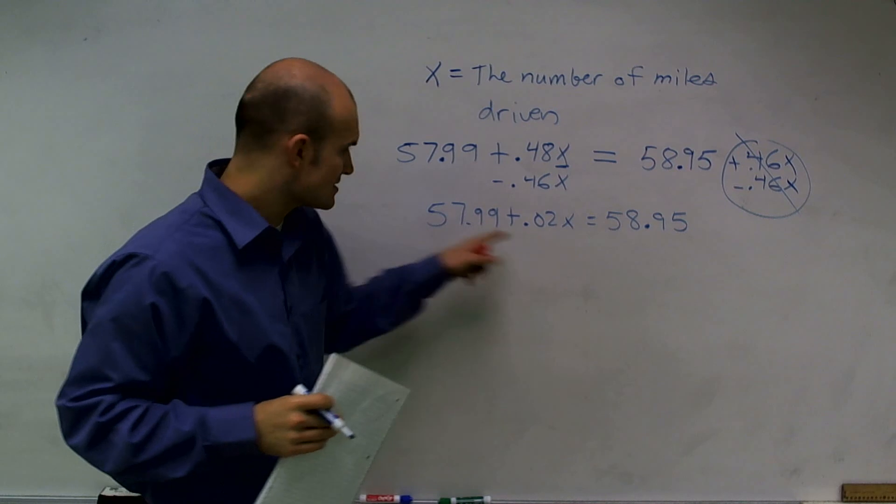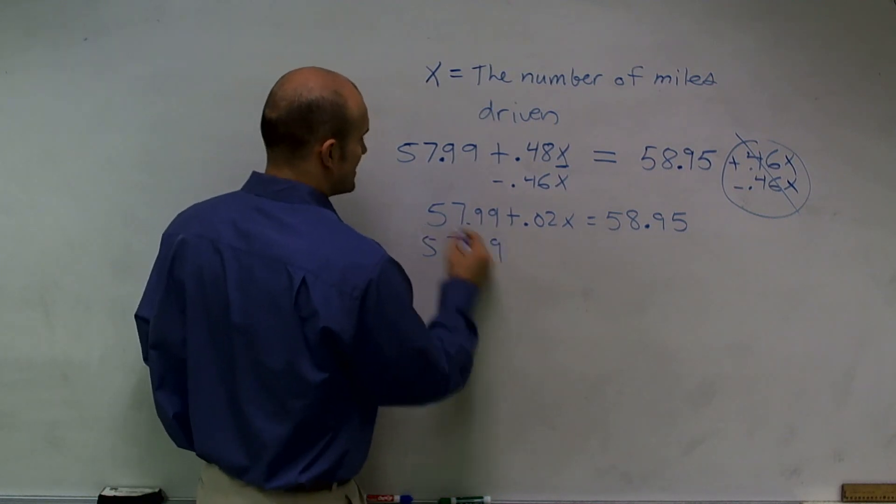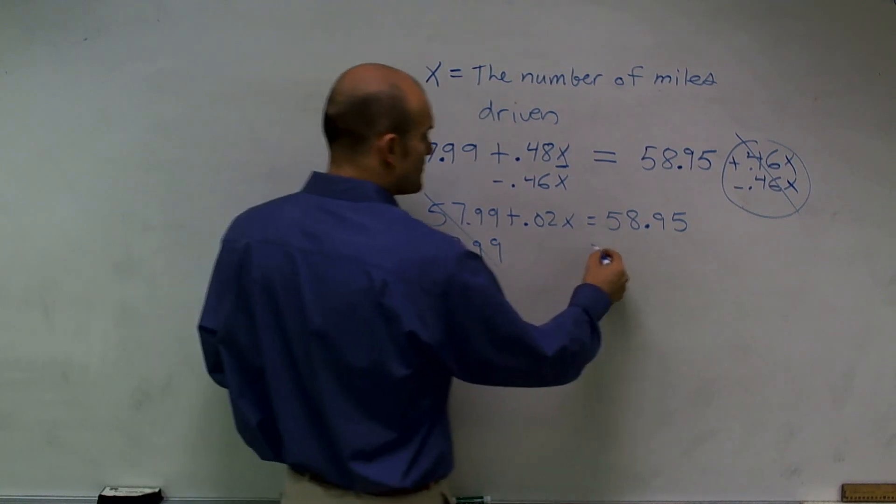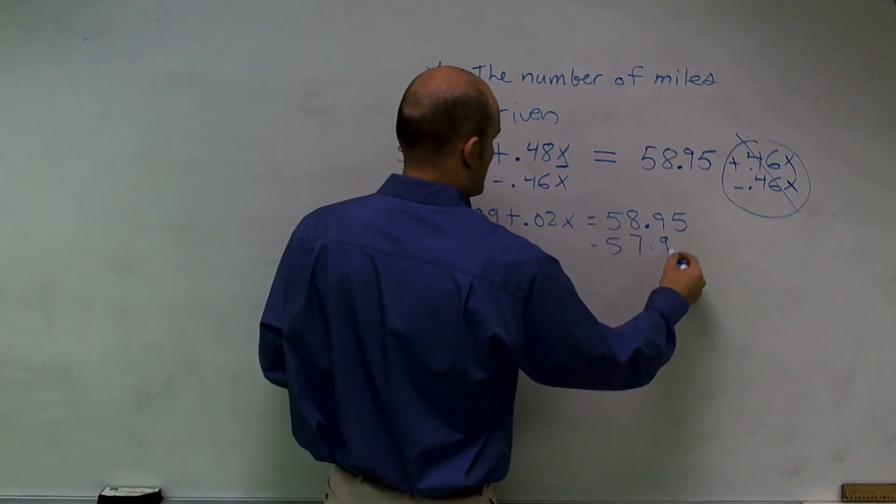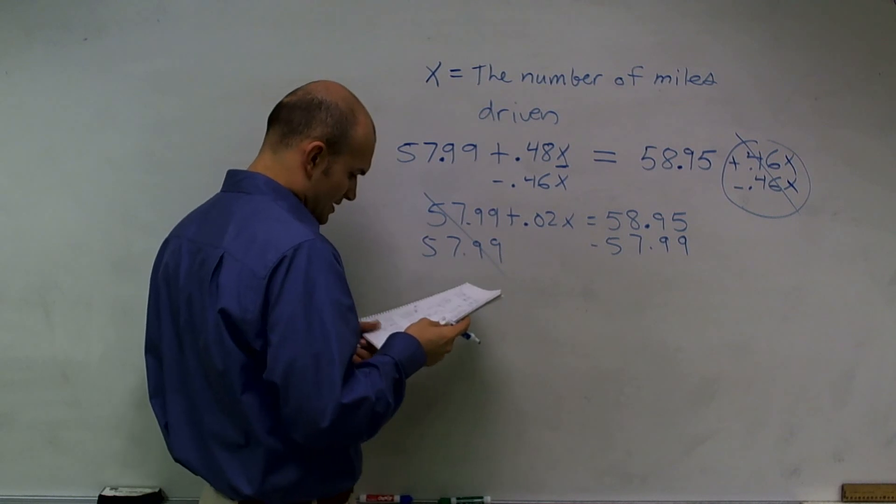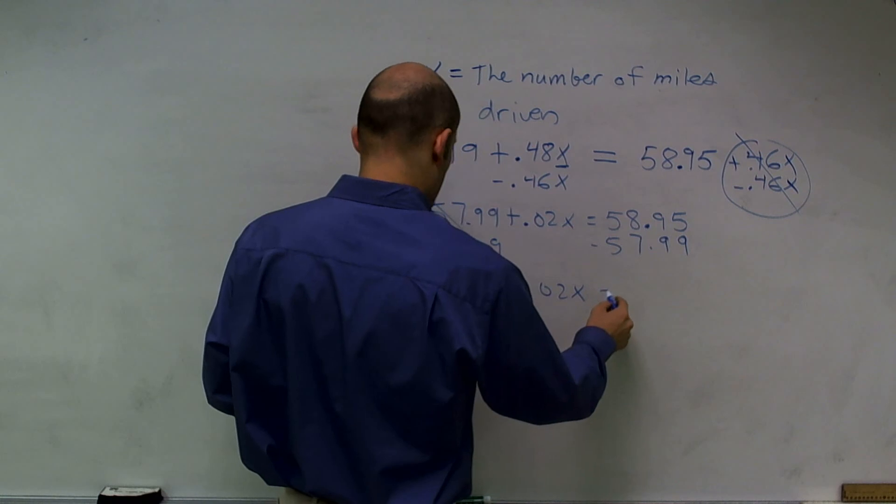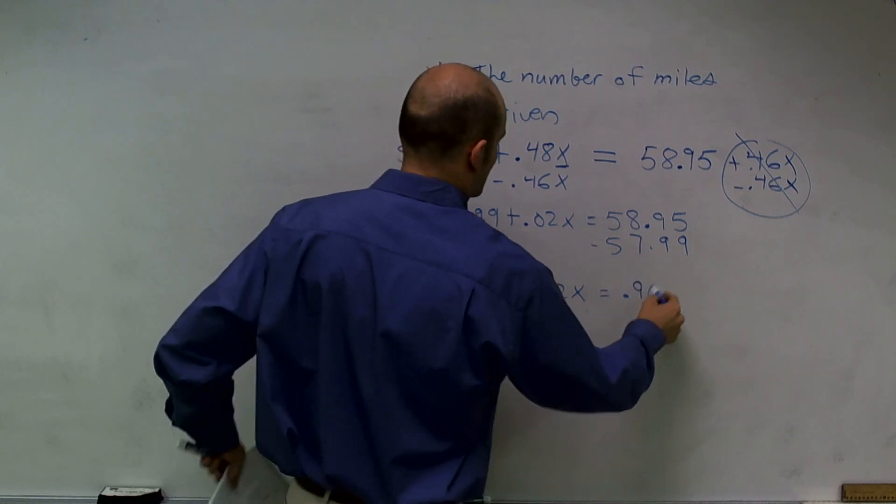Now, to isolate my X, I need to subtract my 57.95 or 57.99. That's going to cancel to 0. And what my answer I end up getting is 0.02x equals 0.96.